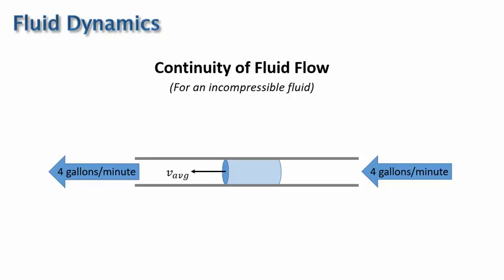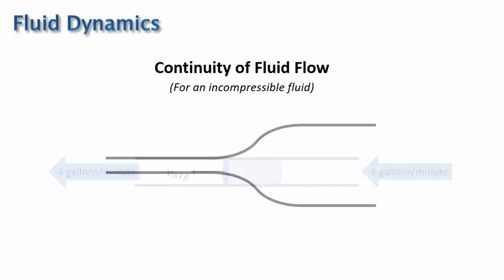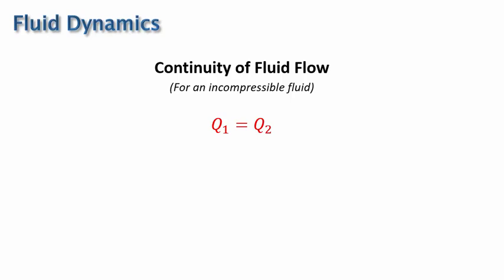And we can say this generically for any two sections of the pipe, even if the pipe has different cross-sectional areas like this. So the flow rate in section one here equals the flow rate in section two here. This statement is the continuity of fluid flow, which you might write as Q1 equals Q2. But it's common to replace each Q with area times speed. So this is how we typically write the equation and apply it.